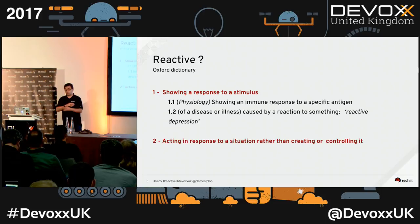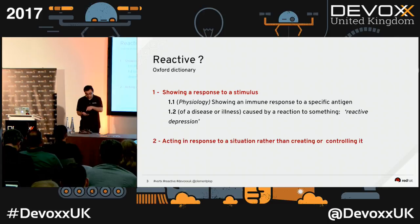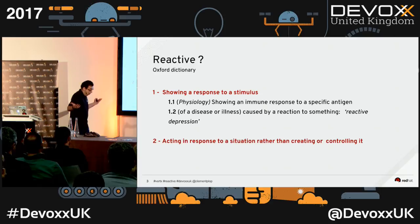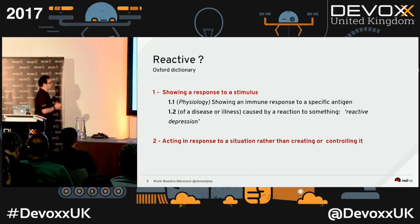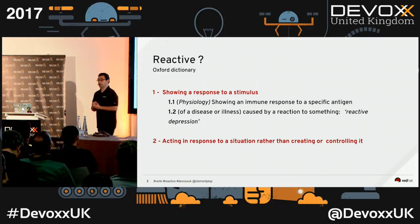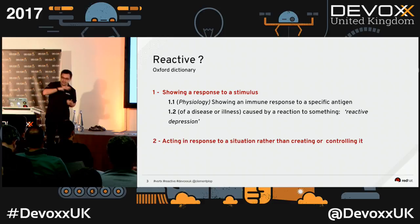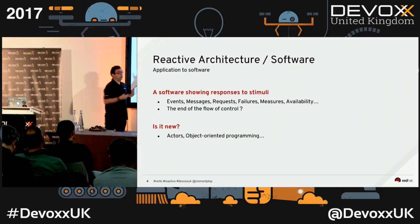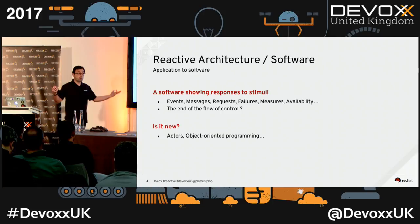I did something that no one is doing anymore: I opened a dictionary. And I read that reactive means showing a response to a stimulus. It has a second definition which is very interesting: acting in response to a situation rather than creating and controlling it. When we apply this to software, reactive software is just software that is going to show responses to stimuli.